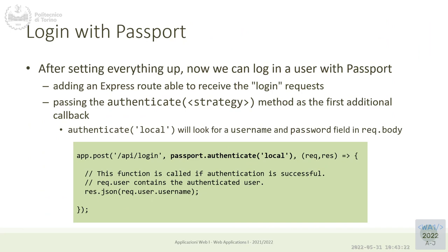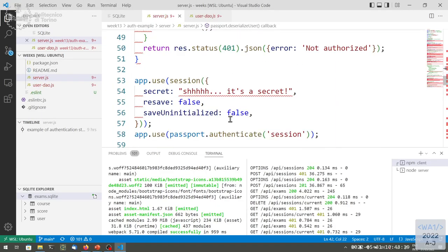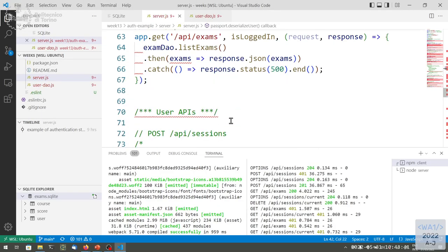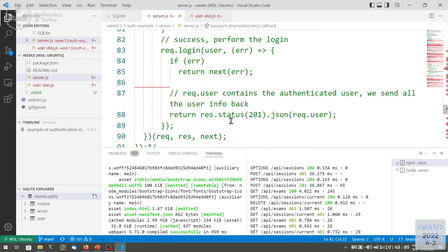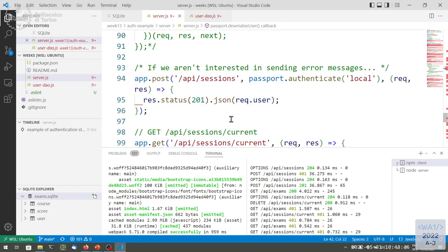So we have an easier interface, and this user object will have the fields that we decide. We see it here — we have one special API.